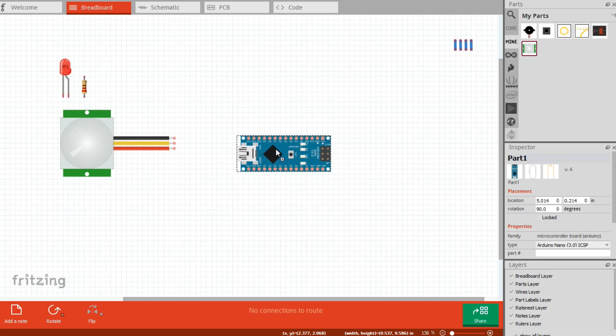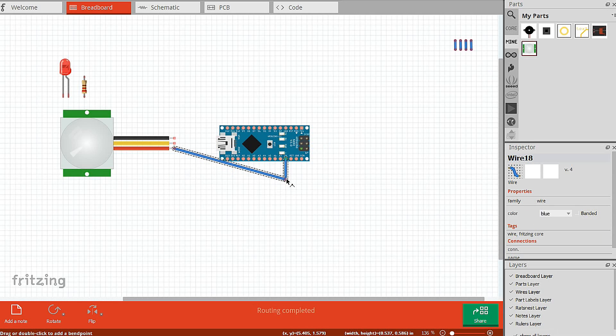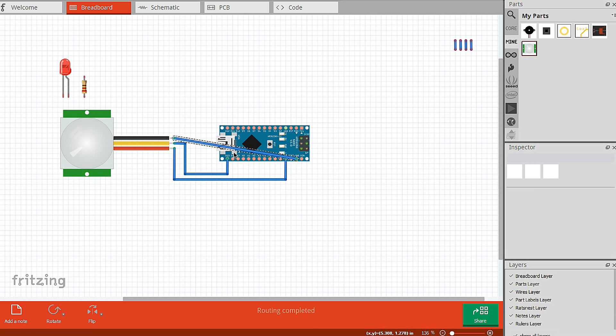Now, to do the same with an Arduino, connect the VCC of the PIR sensor to the 5V pin of Arduino. Then connect the output pin to D13 and ground to the ground pin of Arduino.